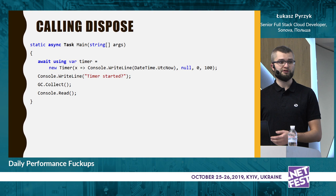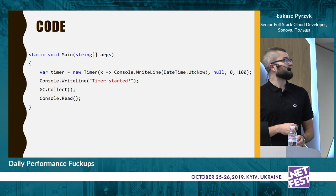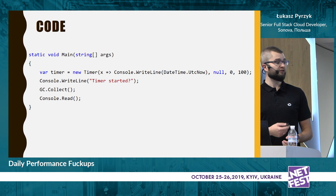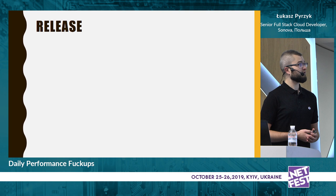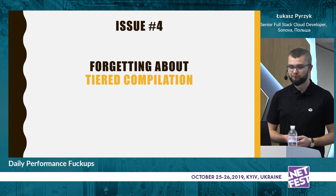But here's a surprise — if you go back to the first timer example with no using, no KeepAlive, just timer, console, GC.Collect, and ReadLine, and run it in release mode, the timer never stops. Tiered compilation is a fairly new .NET feature. It was introduced in .NET Core 2.1 as optional, but in .NET Core 3.0 it is enabled by default.